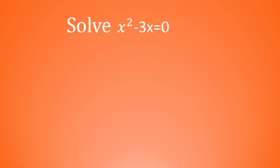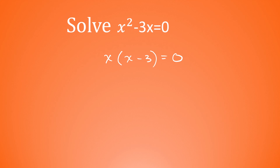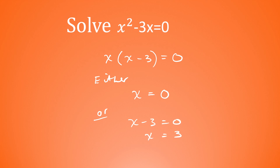Solve x squared minus 3x is equal to 0. We've got a quadratic equation but it's not in the usual format with three parts. This time it's just got two parts. When you have that, you can factorize it into just one pair of brackets. The common factor of x squared and negative 3x is x. So we take that factor out: x outside the bracket, and inside, x times x gives x squared and x times negative 3 gives negative 3x, equal to 0. So either x is equal to 0, or x minus 3 is equal to 0, in which case x is equal to 3.